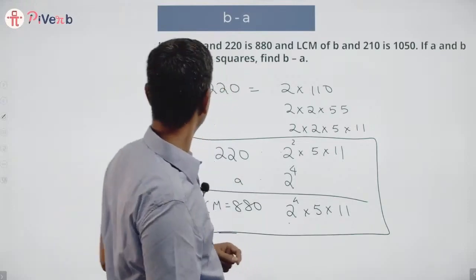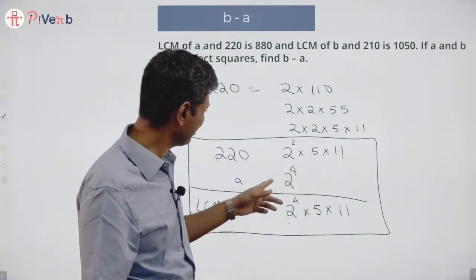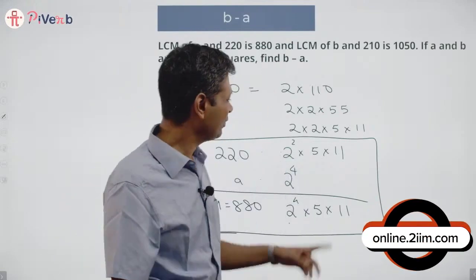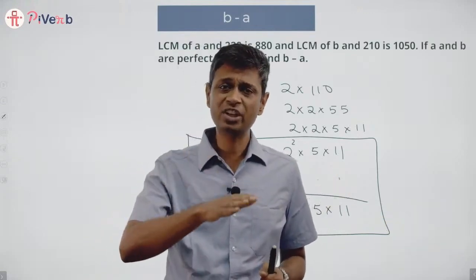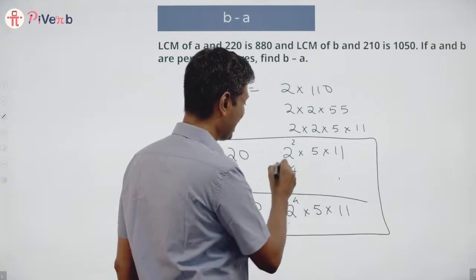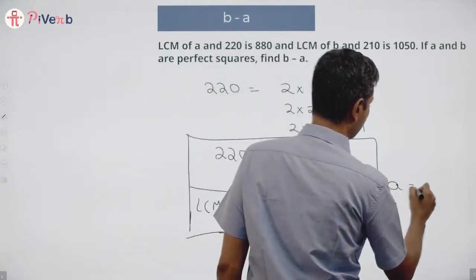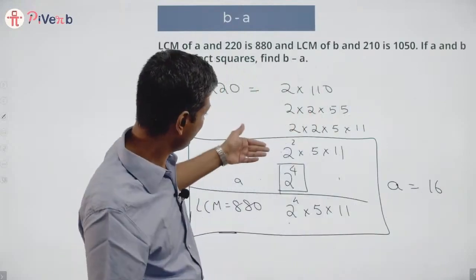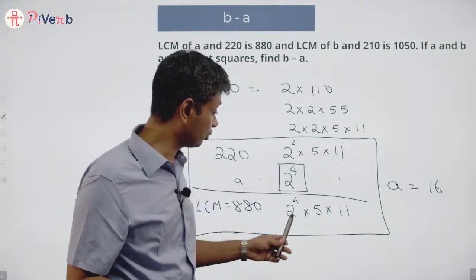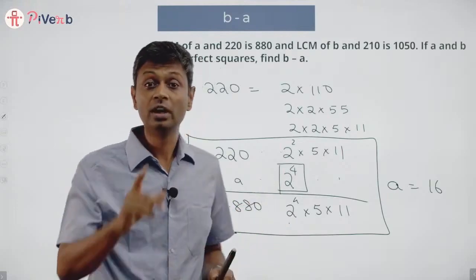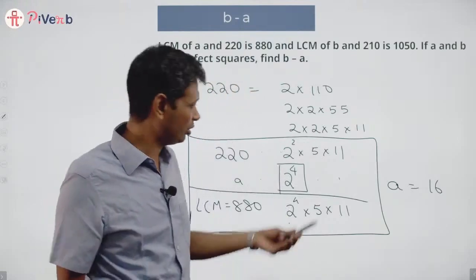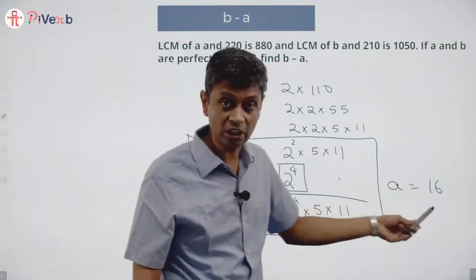Now we use the fact that a is a perfect square. 2⁴ = 16, which is 4² — that works. But 16 × 5, 16 × 11, or 16 × 5 × 11 are not perfect squares. So a cannot have 5 or 11. Therefore a must be just 2⁴ = 16.